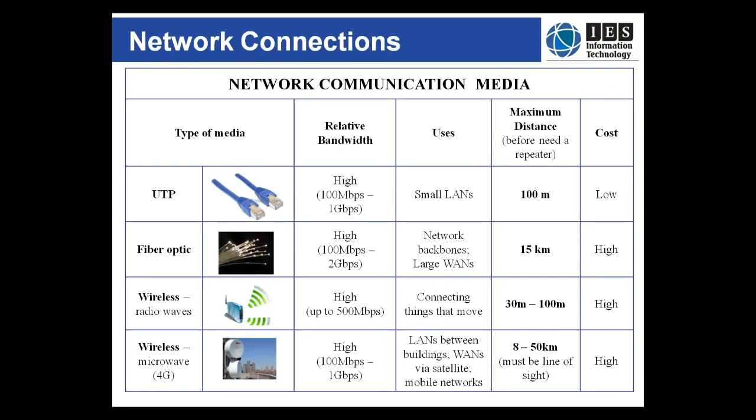A table outlines the relative strengths and weaknesses of different types of communication media. UTP's biggest advantage is cost — it is cheap — but its bandwidth is relatively poor and its maximum distance is only fairly short. Fibre optic cable's biggest drawback is its cost, both in terms of the cable itself and the equipment required to terminate and join cables. Wi-Fi — radio wave wireless media — can have a relatively high bandwidth, but most Wi-Fi communication is done at a lower bandwidth than UTP, as it's cheaper to produce.